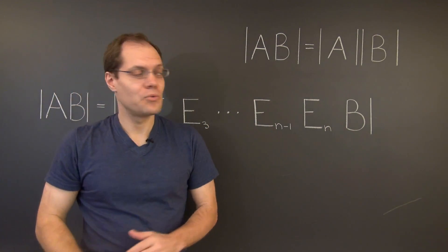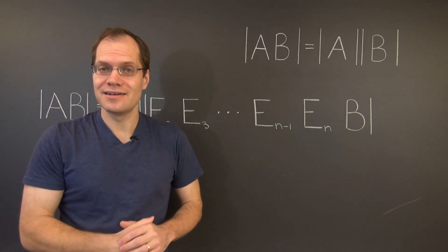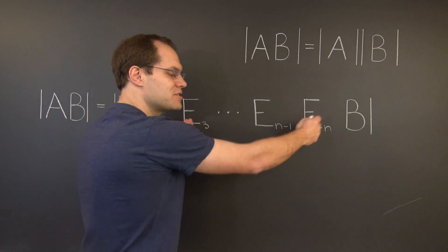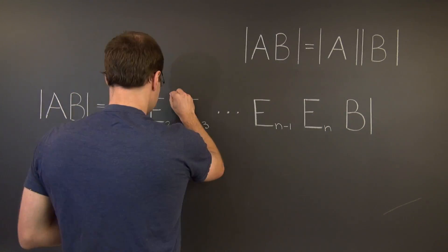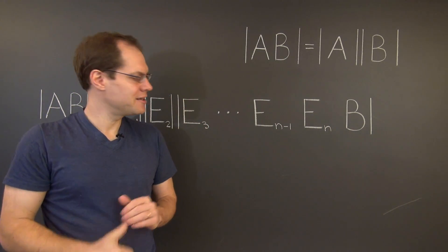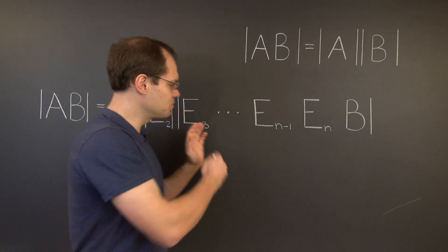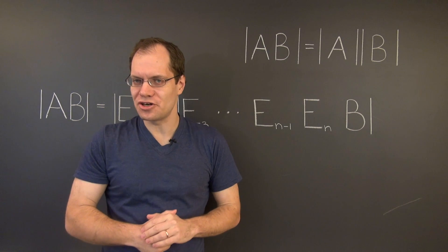And now we can apply this formula again, this time to E2, an elementary matrix, and the rest of the product. And we can continue with this reasoning until the entire determinant is broken up into the individual determinants.